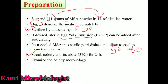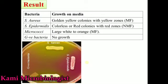If the sample was collected from food or water, streak it on this media for the identification or isolation of Staphylococcus bacteria. Once the bacterial sample is streaked, incubate at 37 degrees Celsius for 24 hours using an incubator machine. After 24 hours, check the colony morphology by naked eye.